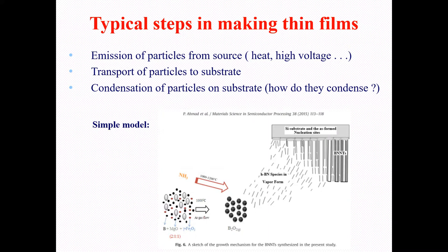Once we have the particles, the second step is transport of the particles to the substrate. We transport the vapor particles — that is hexagonal boron nitride species — in vapor form to the silicon substrate.